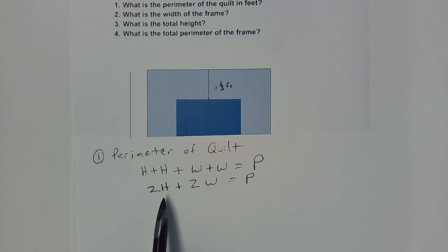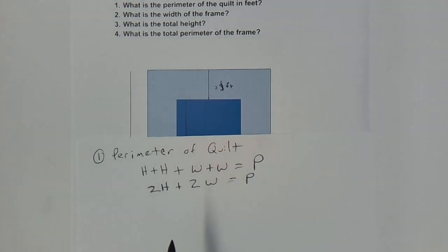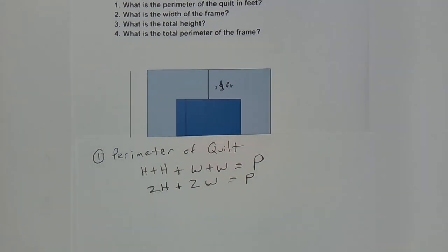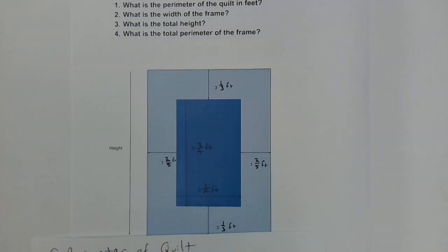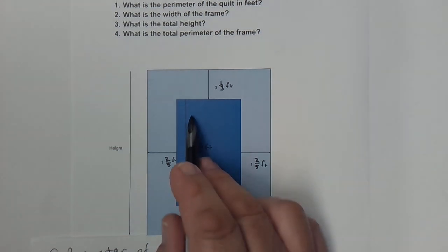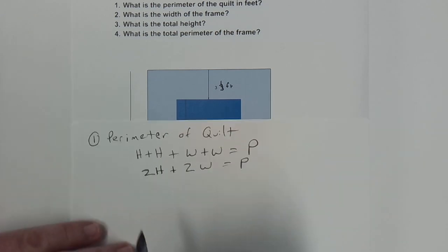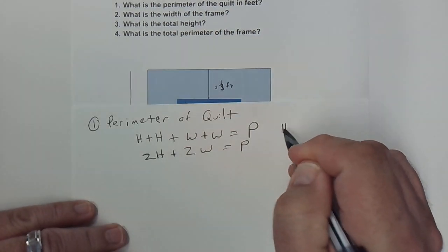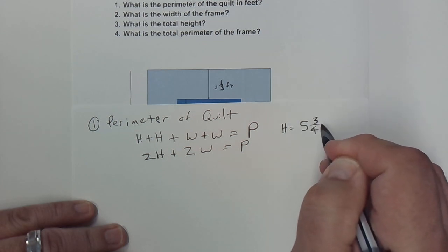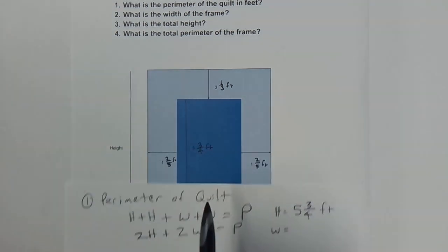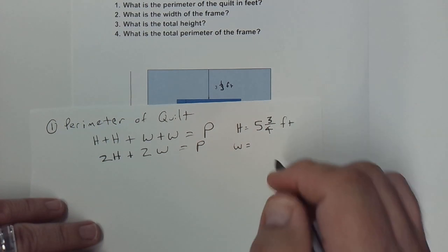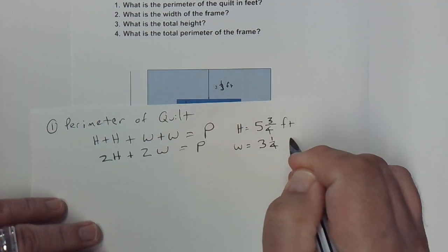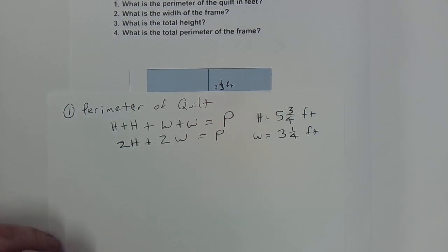Do we have the values? Yes — the height is five and three-quarters feet, and the width is three and a quarter feet. So we can start filling these into our formula: 2 × H + 2 × W = perimeter, where H = 5¾ feet and W = 3¼ feet.